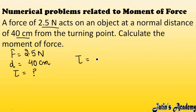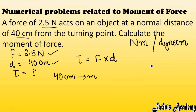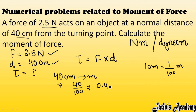As we know, the formula is torque equals force multiplied by perpendicular distance. To calculate the moment of force, units must be consistent. In SI units, force should be in newton and distance in meter. In CGS, force is in dyne and distance in centimeter. Here, force is already in SI units but distance is in CGS, so we convert 40 centimeter to meter: 40 divided by 100 equals 0.4 meter.